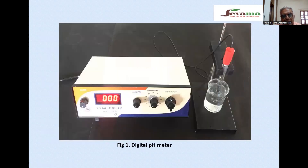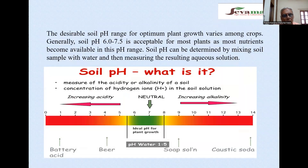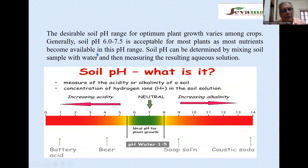This is a digital pH meter used to measure soil pH. The desirable soil pH range for optimal plant growth varies among crops, but generally a soil pH of 6.0 to 7.5 is accepted for most plants, as most plant nutrients become available in this range, generally 6.5 to 7.5.